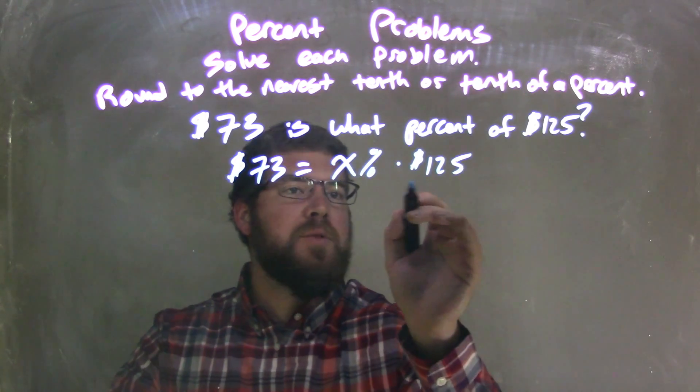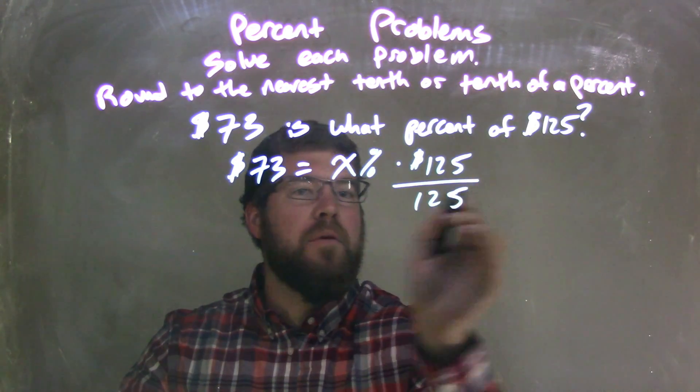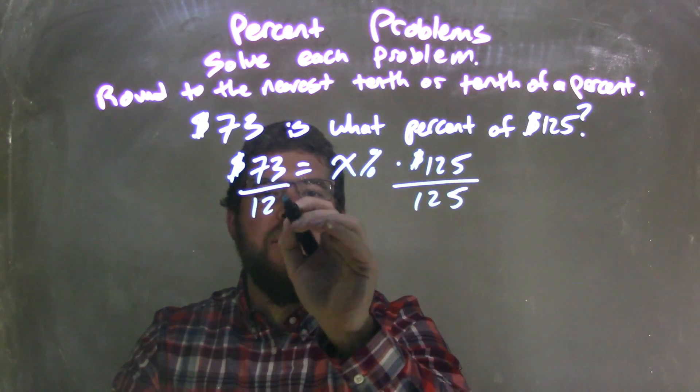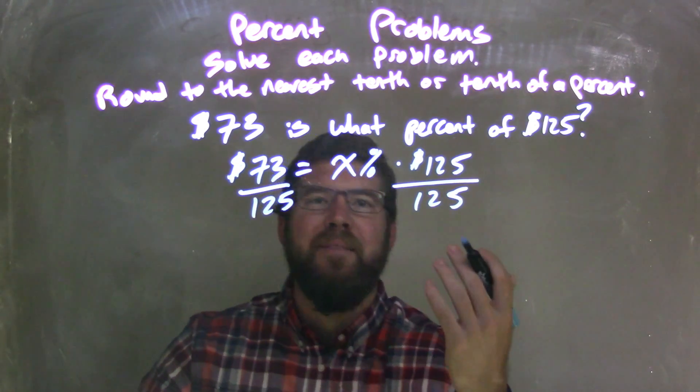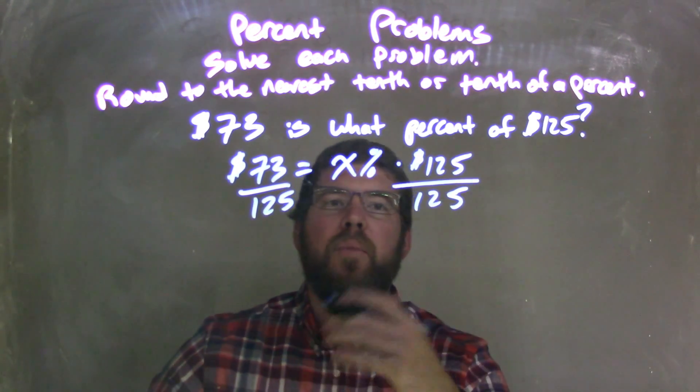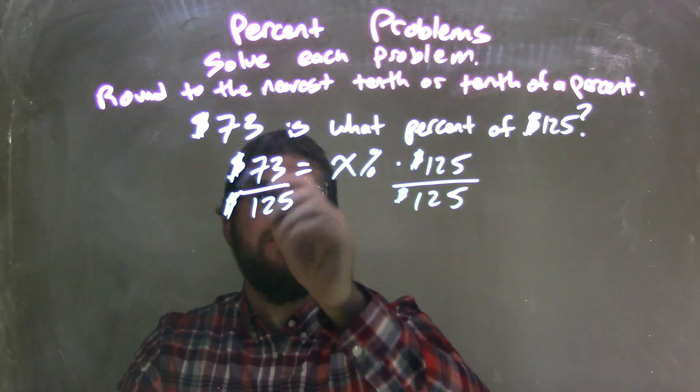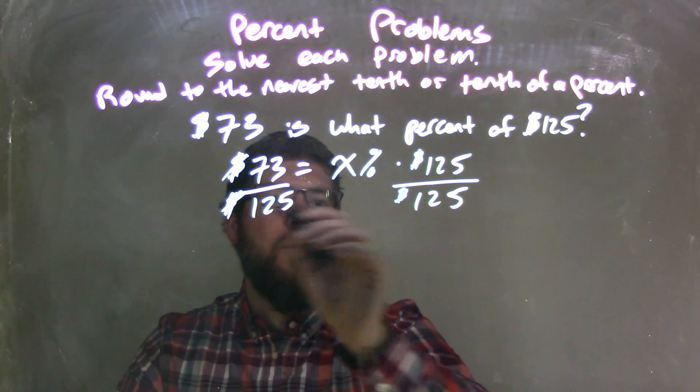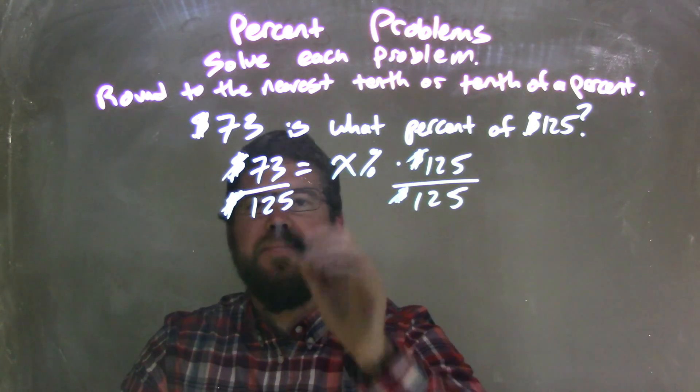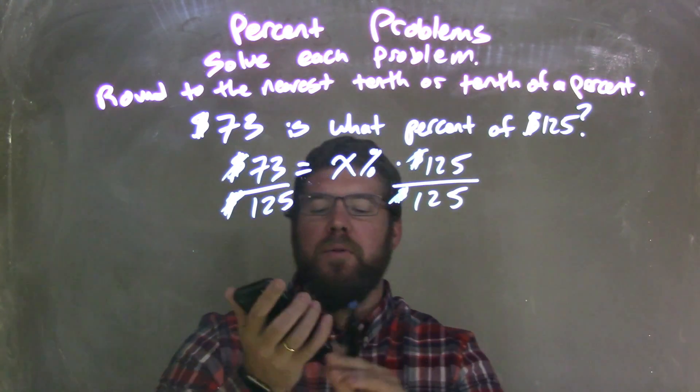If I divide both sides by 125, I'm going to get rid of the units. I know my answer is my percent, but the units kind of cancel and you can figure it out like that. So if I divide both sides by the dollar signs, you can almost imagine the dollars cancel. But what's $73 divided by 125?